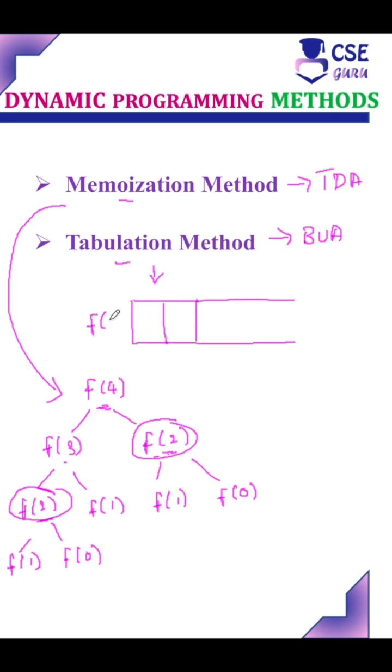In Fibonacci series, if you want to find F of 4, the base value is F of 0 and F of 1. F of 0, the value is 0. F of 1, the value is 1. So, we want to find the next value.